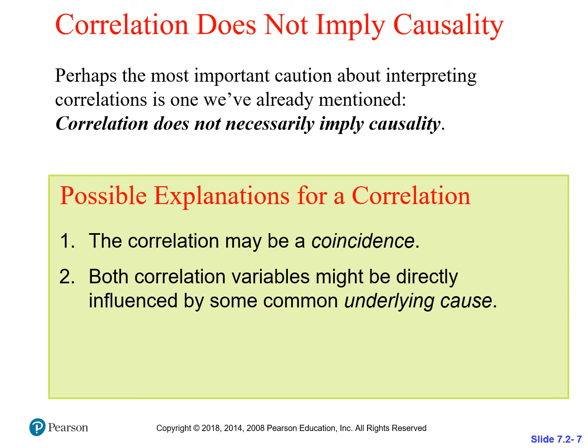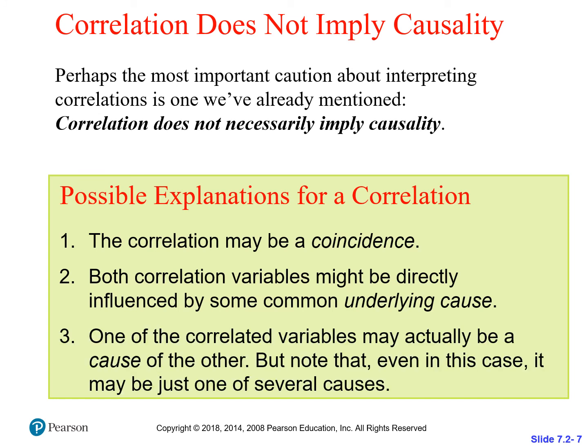A good example might be that TV example we talked about a few moments ago. The type of student who is interested in watching educational TV may just be interested in learning. So naturally their GPA is going to be higher. That doesn't mean the TV causes the GPA, or the GPA causes them to watch more TV. There's some other latent variable that is influencing both of them — a common underlying cause.